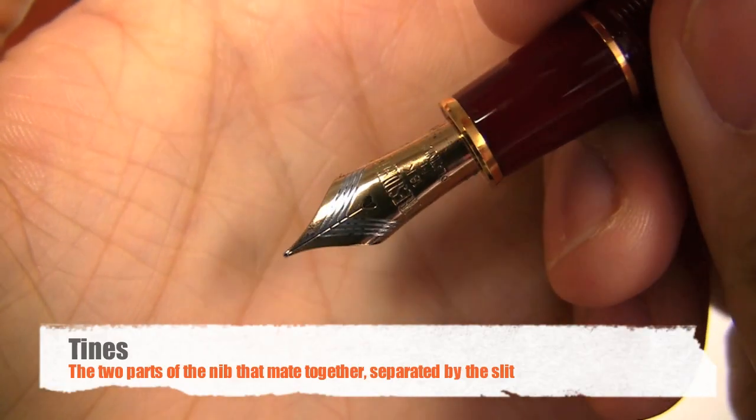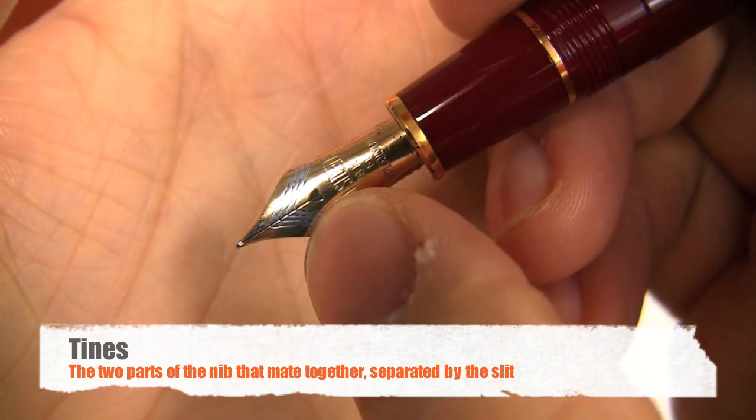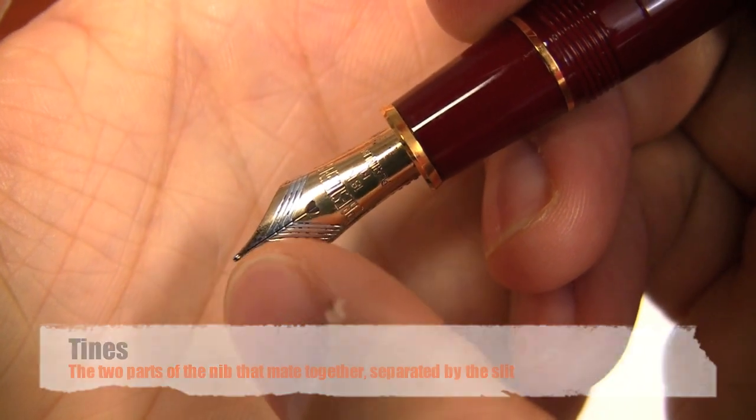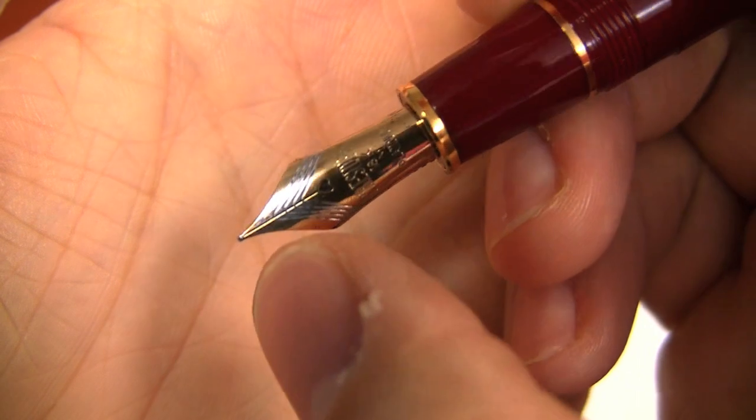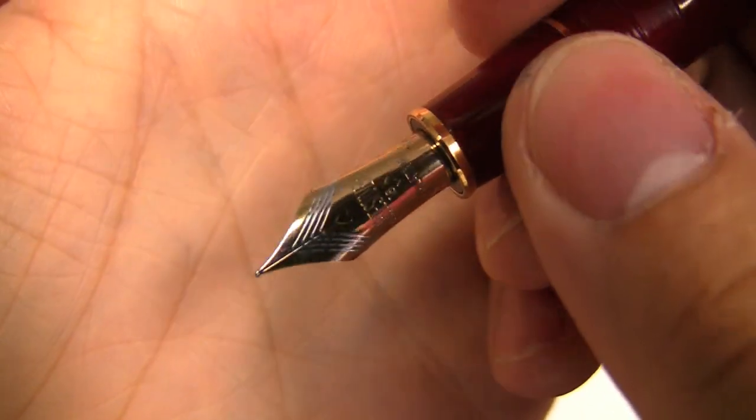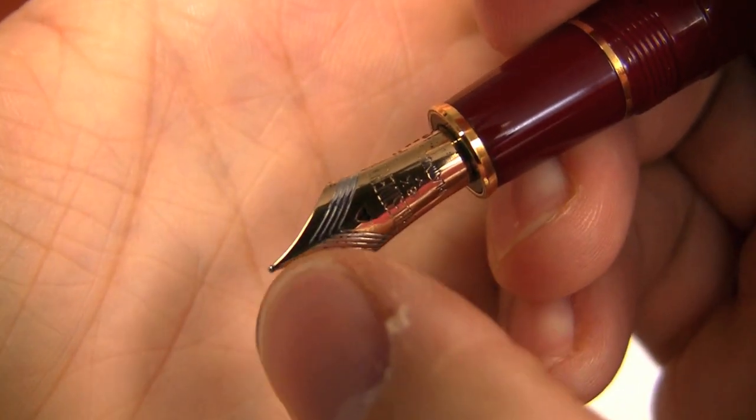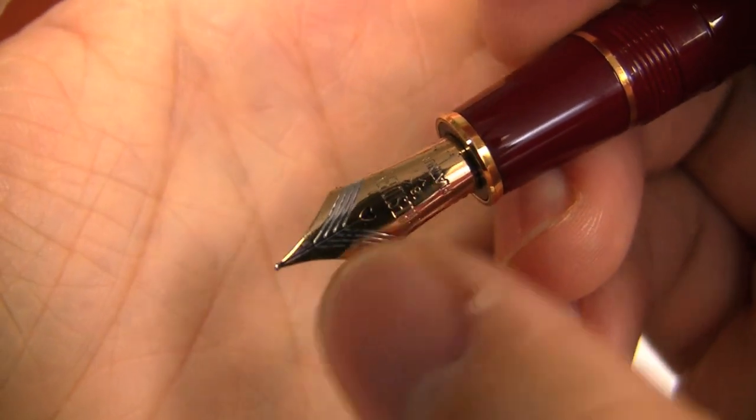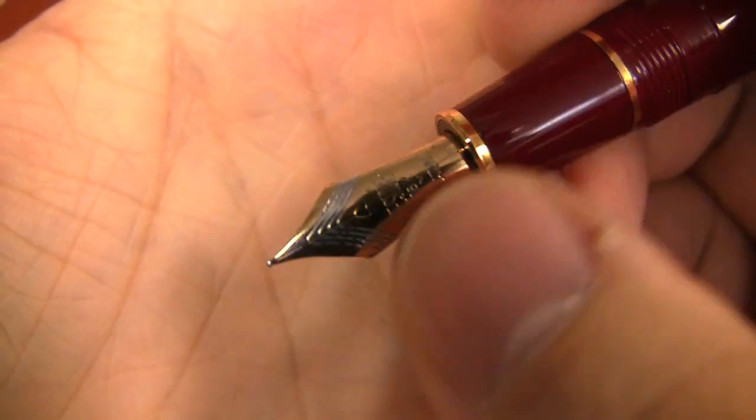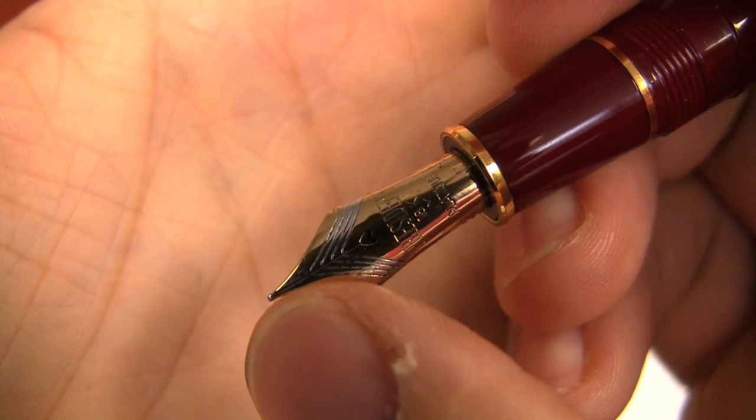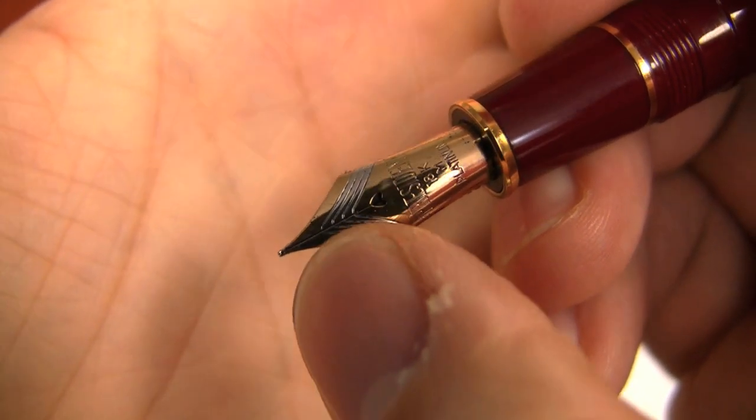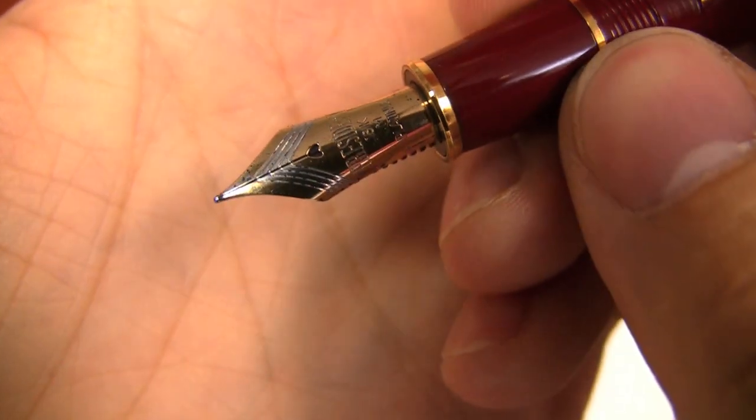Fountain pen nibs have what are called tines. Because you have a slit going straight down the middle that completely splits that nib in half, you have tines just like you have on a fork. Except these tines are very close together. Together with the slit they provide the capillary action to actually move the ink forward to the tip. But when you're referring to one side or the other, those are tines.